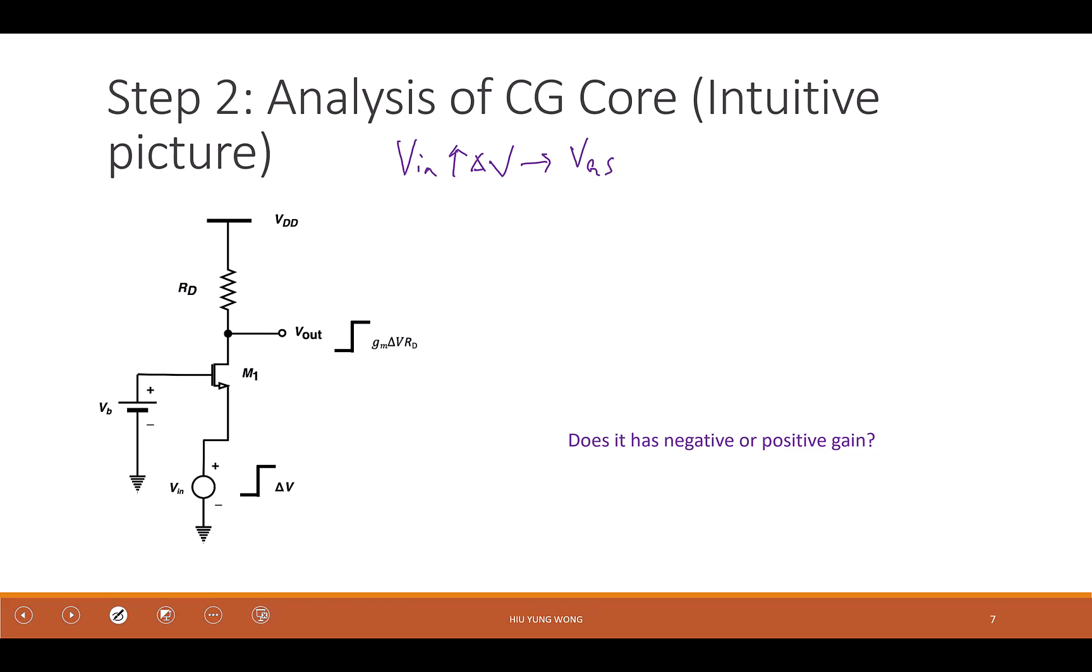If you don't get it right away, just break it down. What is VGS? VG minus VS. Very good. And then what is VG? VB, which is a constant. Very good. And then VS is VIN. So now VIN increased by delta V. What happened to VG? VG stayed the same. Sorry, VGS. VG stayed the same, so what happened to VGS? It went down. Went down by delta V.